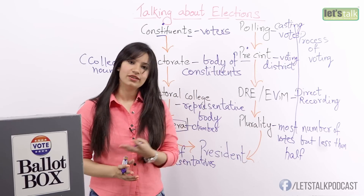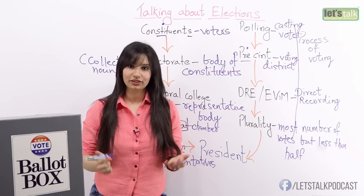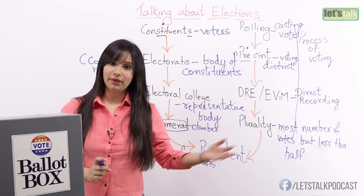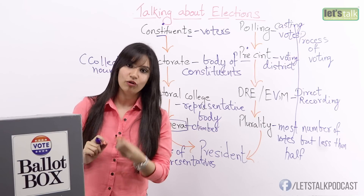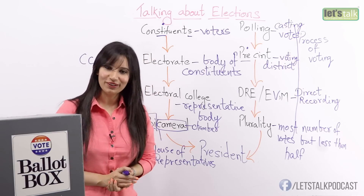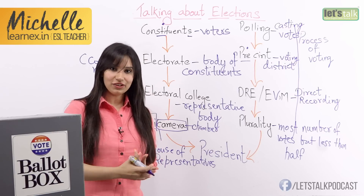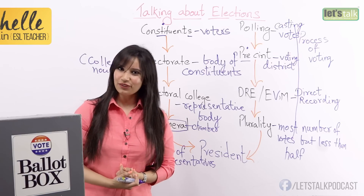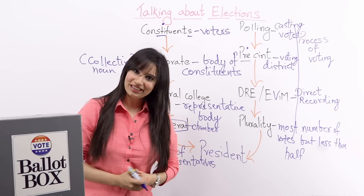Plurality is always possible when there are three or more candidates. You cannot have plurality with only two candidates because there's nothing less than half there. And at the end we come back to the president — the winner, the final person who is going to run the democracy or the country. So here are the words for election that fit the bill. You can use these words to talk about the elections coming next month in the US and worldwide. I hope this lesson was fun and not another political science school lesson. Please come back for more lessons!